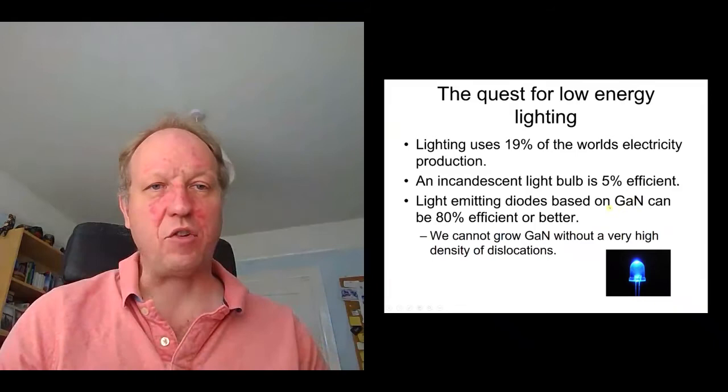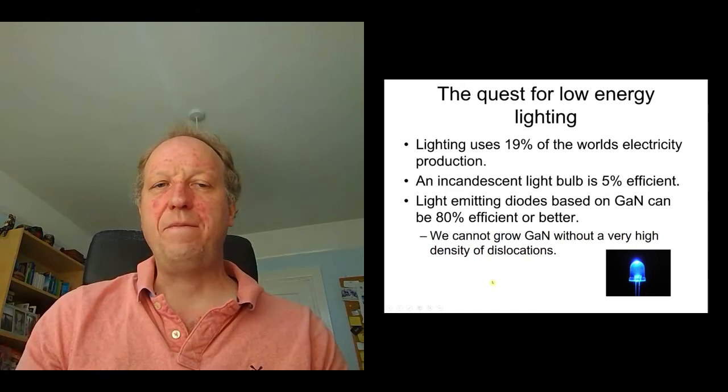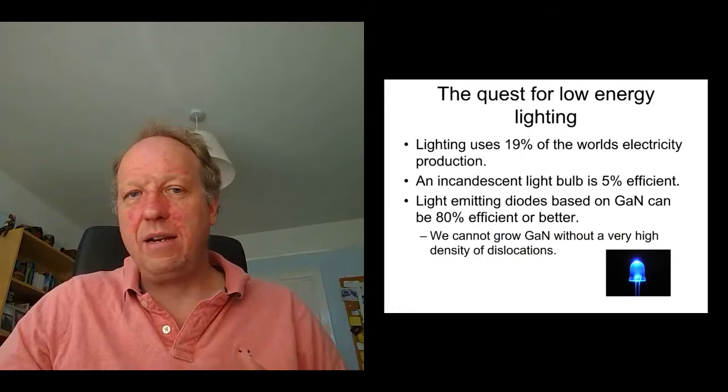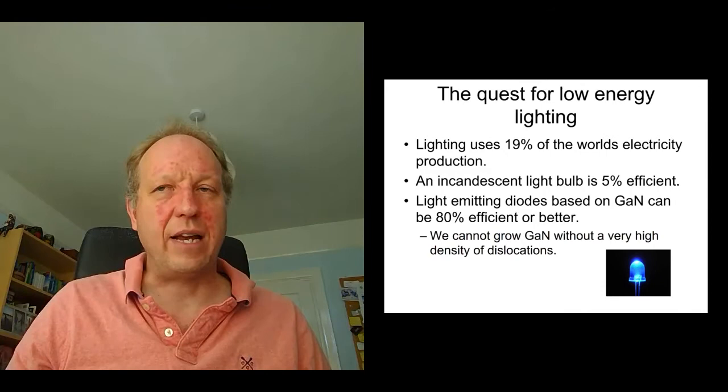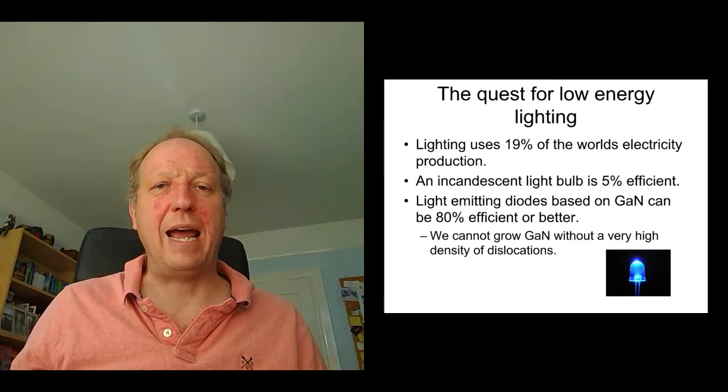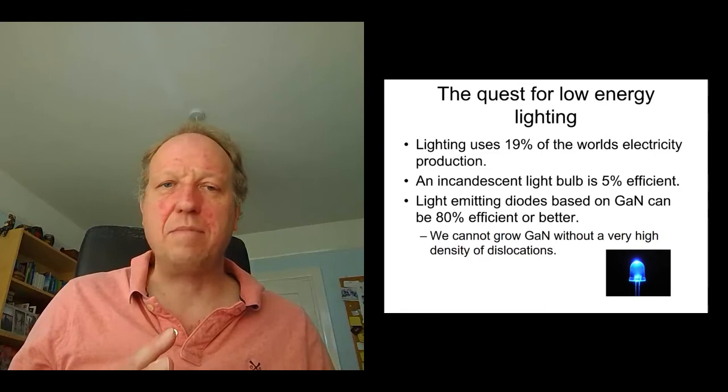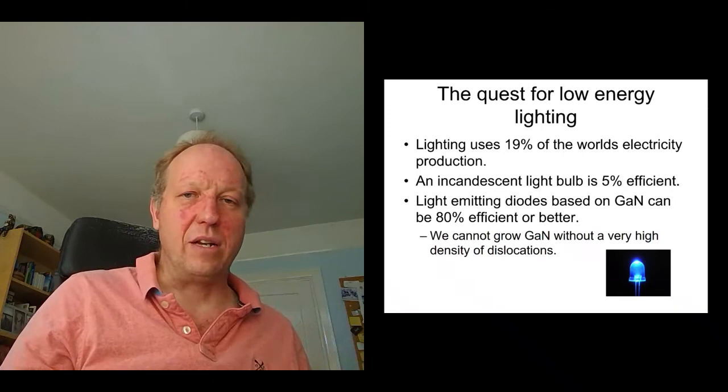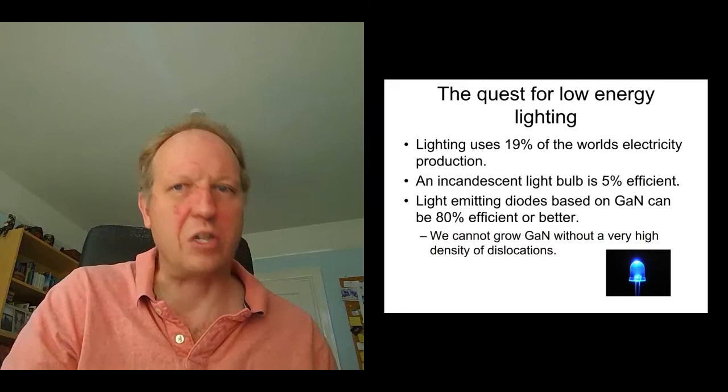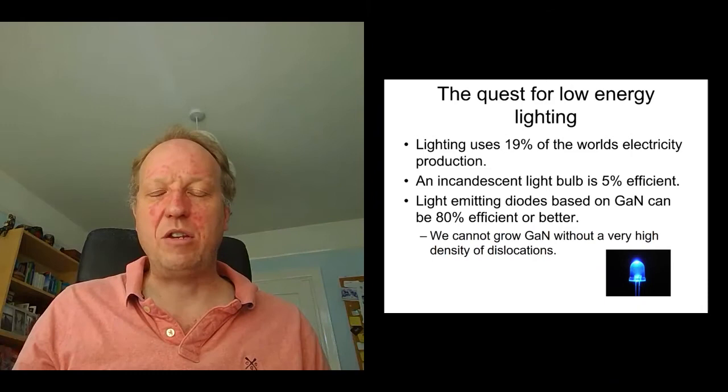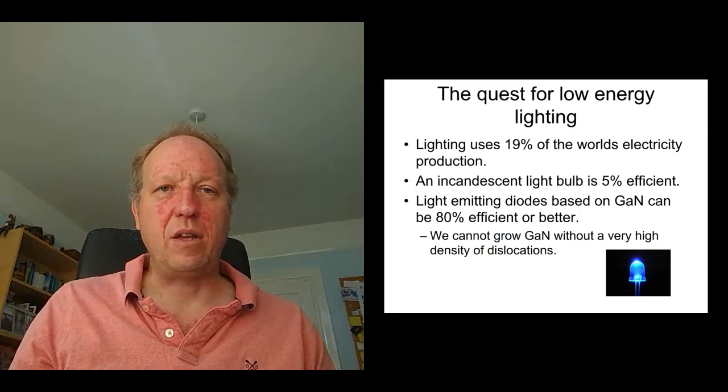Now, the interesting thing about gallium nitride is that we cannot grow gallium nitride without a very high density of dislocations. And we talked about dislocations already in the context of things bending. Here, actually, the reason we cannot grow gallium nitride without a very high density of dislocations is because the substrates, the gallium nitride is a synthetic material, we have to grow it in the lab, we can't just dig it up out of a mine. And you have to grow it on other substrates, and it doesn't lattice match very well the other substrates that we grow it on, including sapphire and silicon carbide. And so because it doesn't match very well with these other substrates that we grow it on, the crystal structures don't match very well, then it just naturally grows with a very high density of these dislocations in the material.